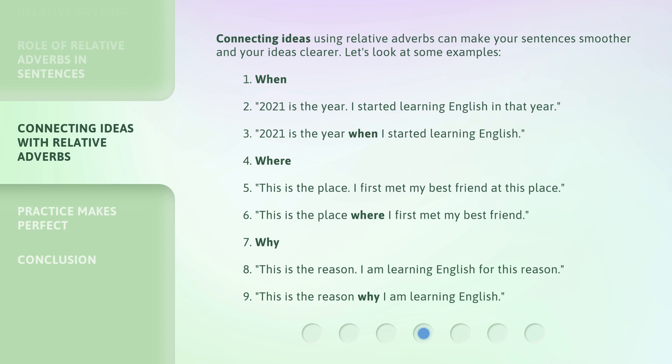Using where: 'This is the place. I first met my best friend at this place.' Combined: 'This is the place where I first met my best friend.' Using why: 'This is the reason. I am learning English for this reason.' Combined: 'This is the reason why I am learning English.'